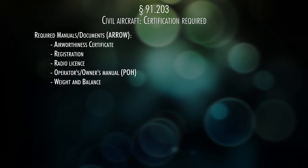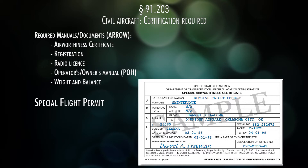91.203 talks about certificates required in the airplane. We already talked about the AERO acronym, but here's an additional item: special flight permits. If your aircraft is un-airworthy, the FAA may allow you to fly it even though it's not airworthy. You'll have stringent restrictions on what you can do, but that's another certificate worth knowing.